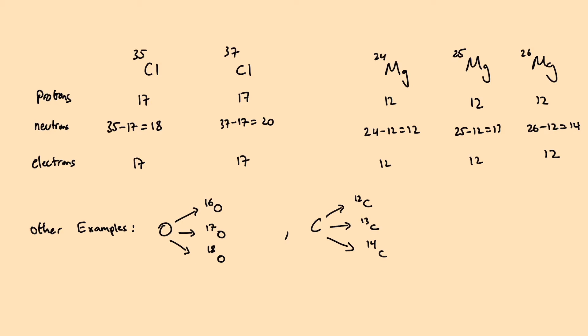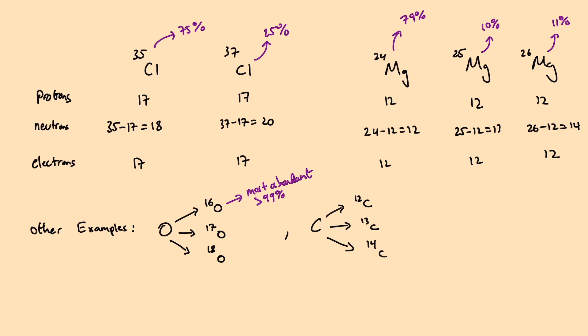These isotopes exist in different abundances, or different quantities in nature. For example, in a sample of chlorine atoms, 75% of those atoms will be mass number 35 and the other 25% will be mass number 37. For magnesium, they exist in different quantities — magnesium-24 is most abundant at around 79%, magnesium-25 is around 10%, and magnesium-26 exists at around 11%. For oxygen, it's oxygen-16 that has the most abundance with over 99%. For carbon, carbon-12 is most abundant with approximately 99% abundance.